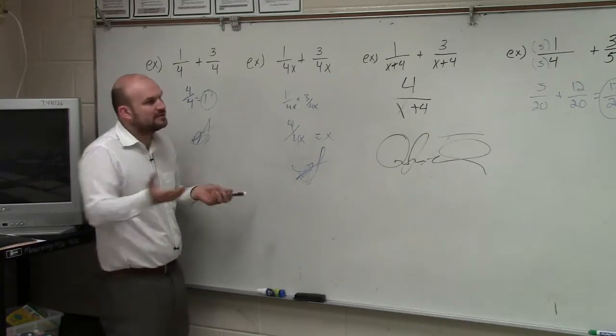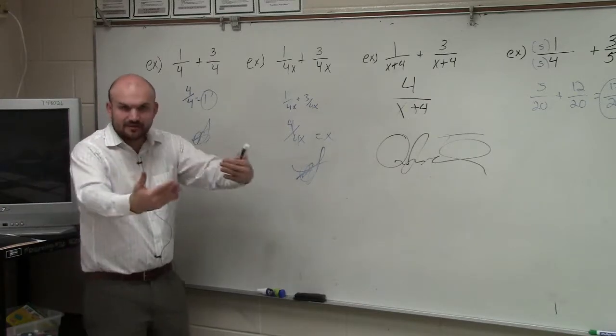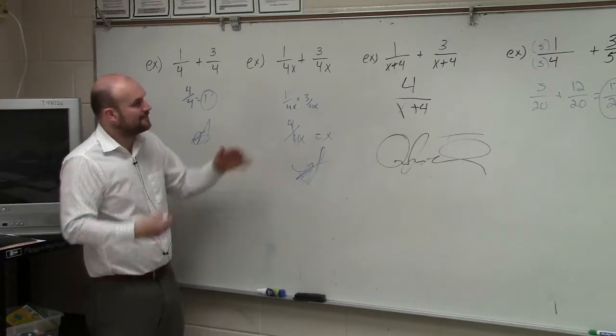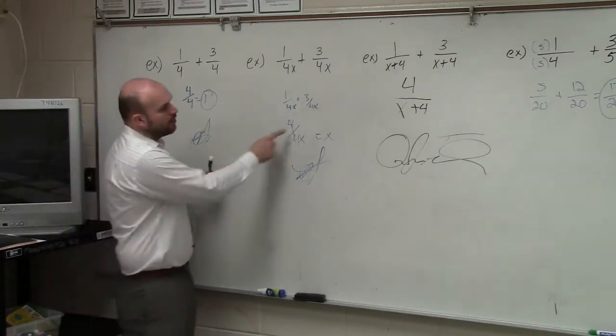I could have 1 over smiley face plus 1 over smiley face. They're common denominators, they're the same. So this becomes 4 over 4x.